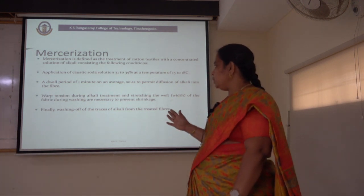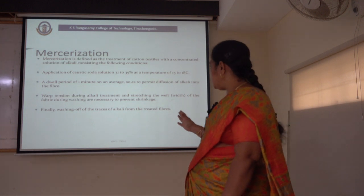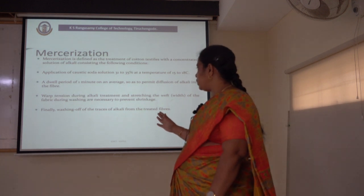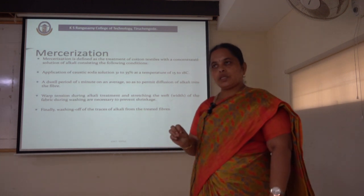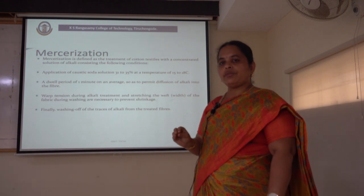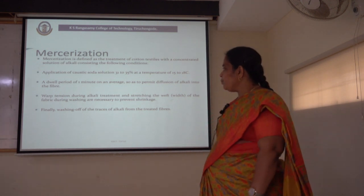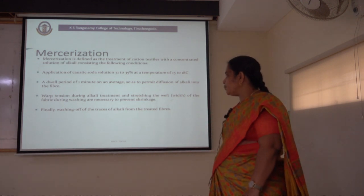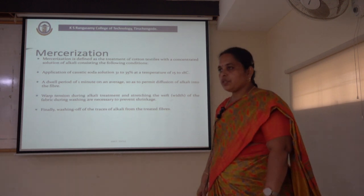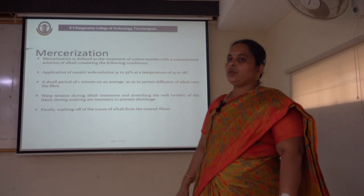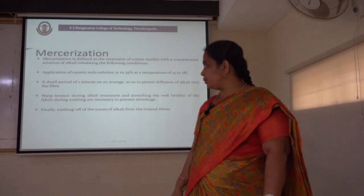The warp tension during alkali treatment and the web tension of the fabric during washing are necessary to prevent the shrinkage of the fabric after the mercerization process. And finally, washing out the excess alkali from the treated fibers is very much essential to have a neutral fabric.